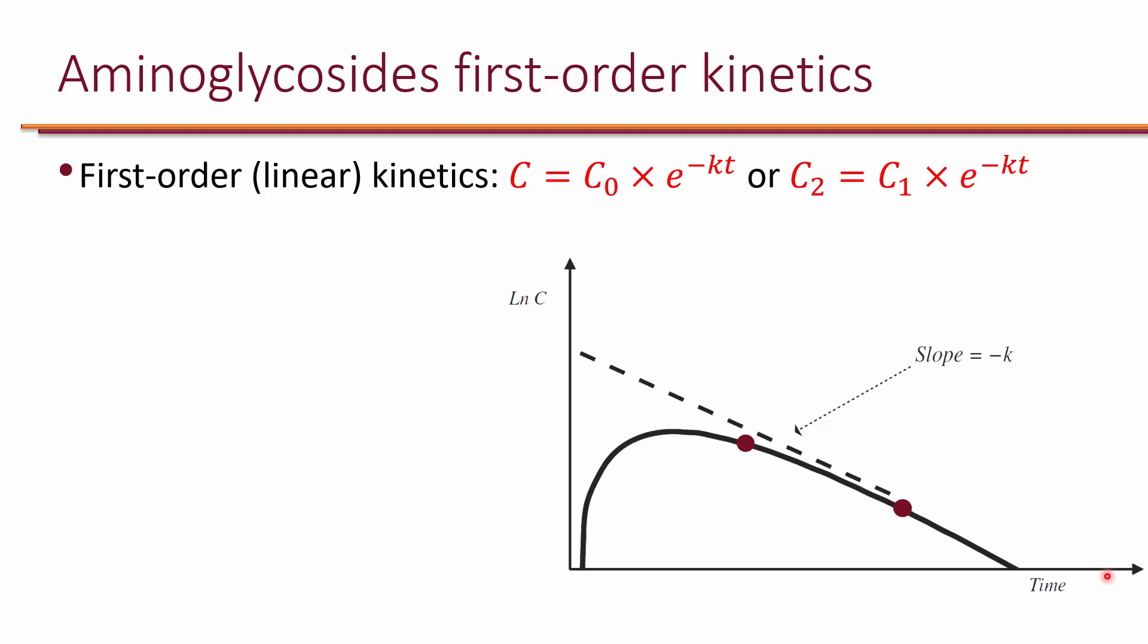Aminoglycosides follow first-order kinetics, also referred to as linear kinetics. The reason this is called linear kinetics is because if you plot the natural log of concentration of aminoglycoside in plasma on the vertical axis and time on the horizontal axis, then you can actually get the linear relationship between two levels. This is assuming that these levels are after the end of infusion and after the distribution phase.